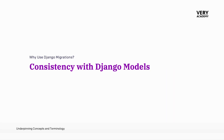Hopefully we have now grasped the essence of Django migrations — to synchronise our Django models with the database. Let's explore why they are a crucial tool in our development arsenal. One of the primary reasons to embrace Django migrations is to ensure that our database schema is always up to date with the current state of our Django models. This consistency is vital for the seamless integration of our code-defined models with the actual database structure.